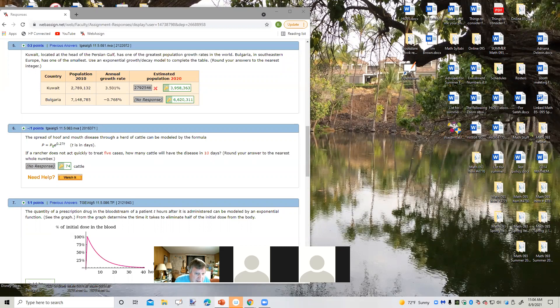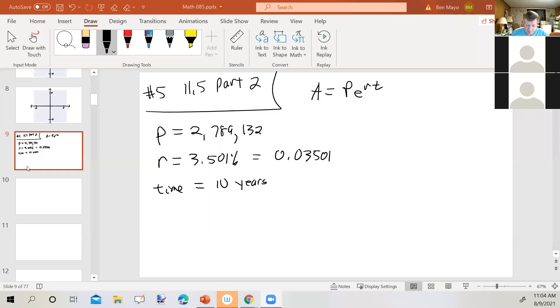And we know that the starting population, so P is 2,789,132. The annual growth rate, which is r, is 3.501 percent, which would be 0.03501. And it says estimated population 2020, so time equals 10 years. Okay, so let me switch back to the other screen. All right. So we know that the population, the growth rate, and the time. So A equals 2,789,132 times e raised to the 0.03501 times 10.